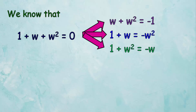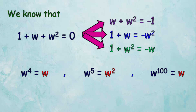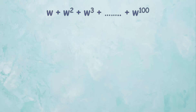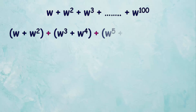We also know that omega to the power of 4 equals omega, omega to the power of 5 equals omega squared, omega to the power of 100 equals omega, omega cubed equals 1, and omega to the power of 6 equals 1. Now let's start solving. We can write this expression as: omega plus omega squared plus omega cubed plus omega to the 4th plus omega to the 5th plus omega to the 6th, and so on until omega to the power of 100.